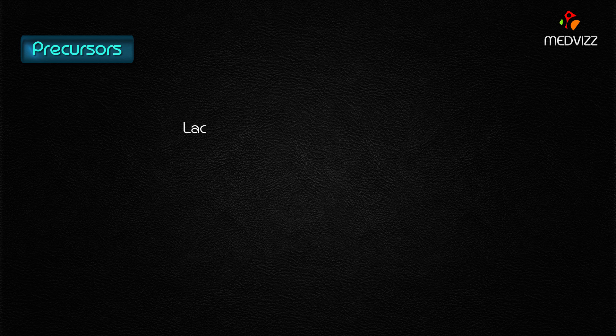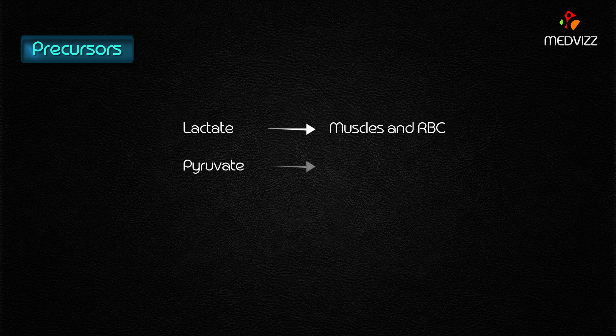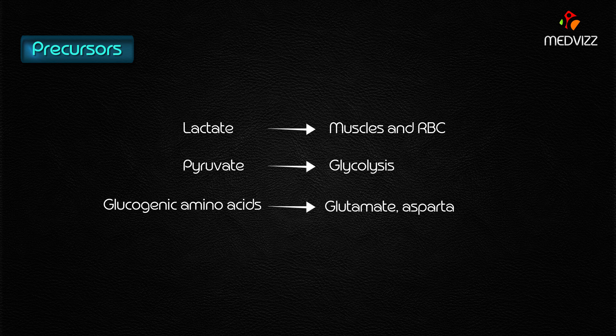What are the precursors of gluconeogenesis? Lactate from contracting muscles as well as RBCs, pyruvate from glycolysis, glucogenic amino acids such as glutamate, aspartate, and alanine, propionate, and glycerol — all these compounds are the key precursors of gluconeogenesis.